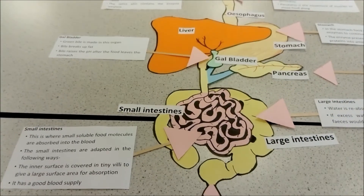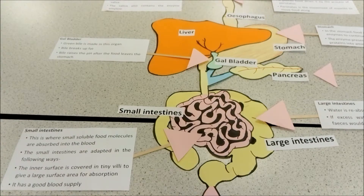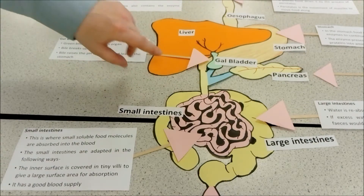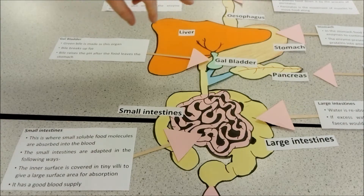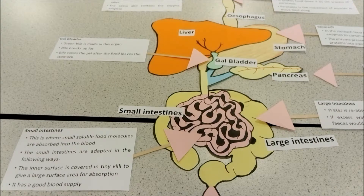After the stomach, the food enters the top of the small intestines called the duodenum. In the duodenum, bile from the gallbladder is added. The bile raises the pH of the food after it leaves the stomach, and it also emulsifies fat — breaking up large fat molecules into smaller fat molecules, thereby increasing their surface area.